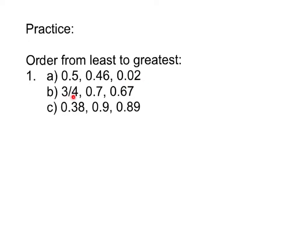B, 3/4. So 3/4 written like that, and you'll often see it like that in your books, actually means 3 over 4. So as a fraction, compare that to 0.7 or 7 tenths and 0.67 or 67 hundredths. And then lastly, 0.38 with 0.9 and 0.89. So go ahead and press pause and try these on your paper and we'll review them in a moment.